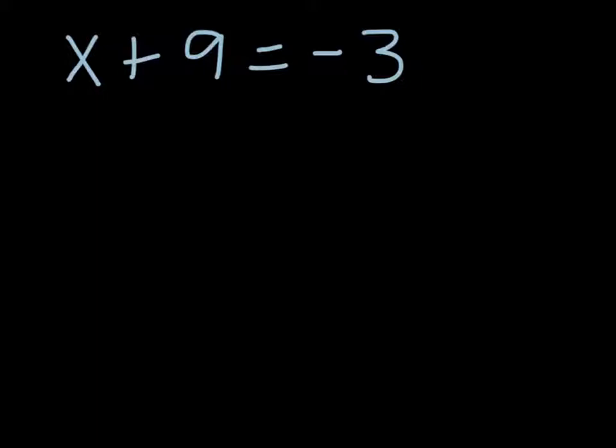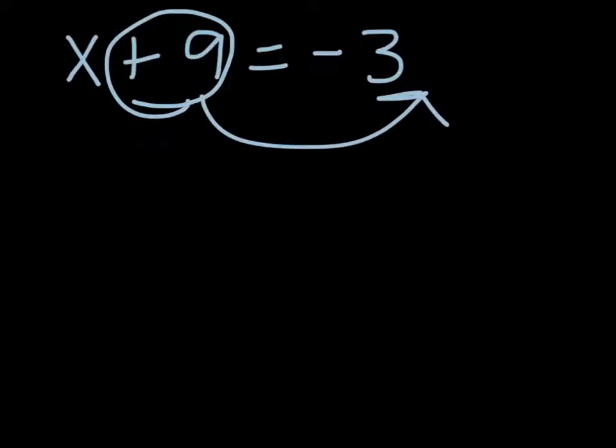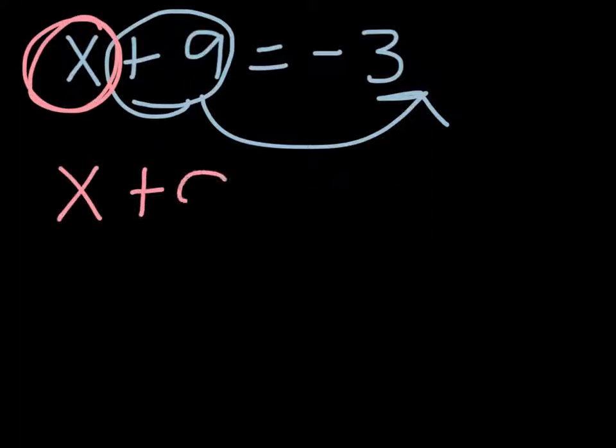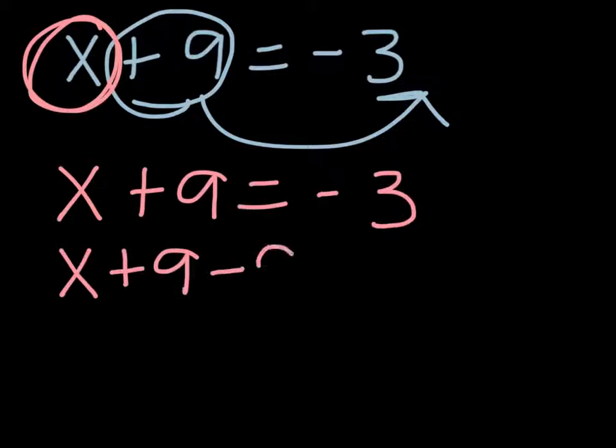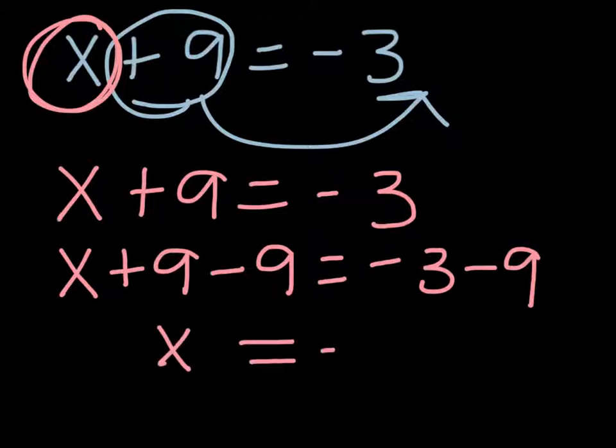Let's use the subtraction property to solve an equation for x. Solve x plus 9 equals negative 3. We can move this negative 9 to this side of the equation using the subtraction property. That lets us isolate the x and solve for x. So rewriting this equation, x plus 9 minus 9 equals negative 3 minus 9. Then we have x equaling negative 12. See how simple that is?